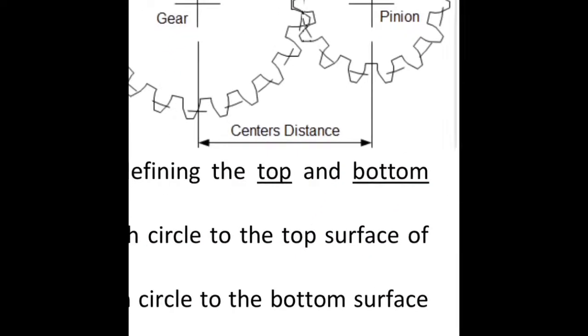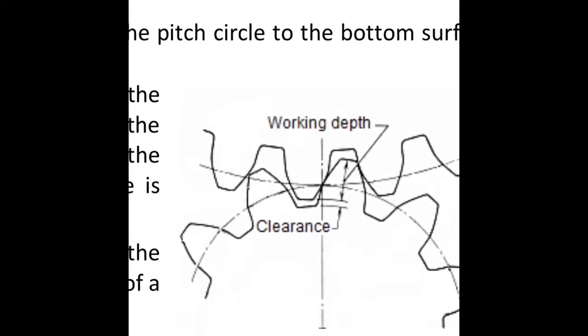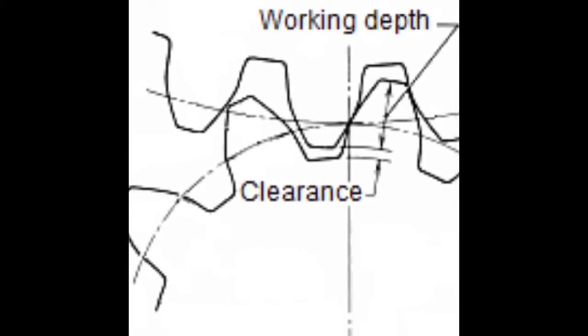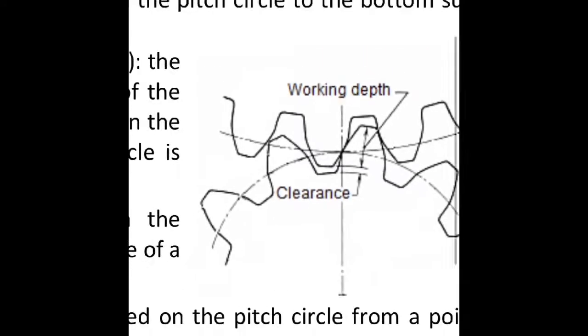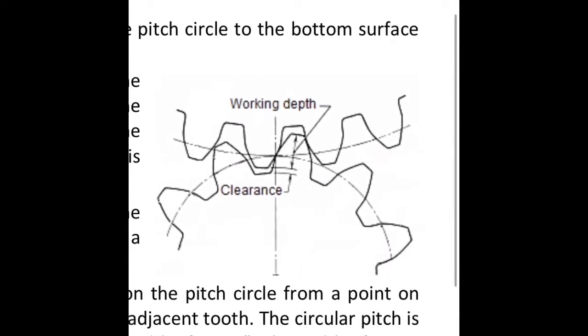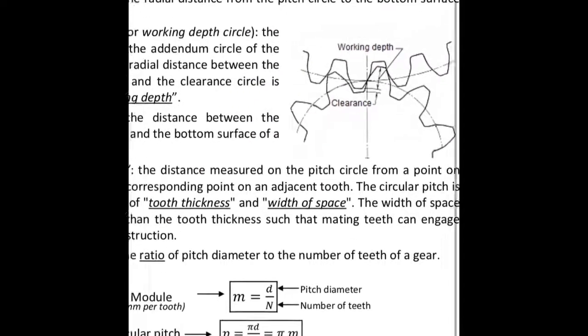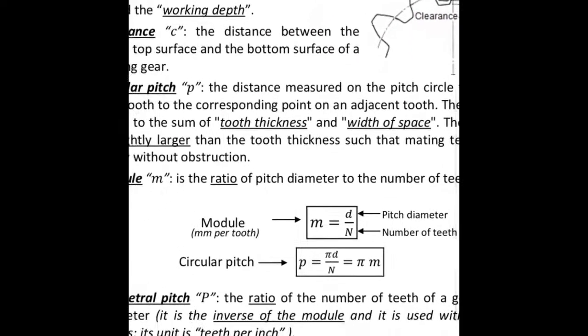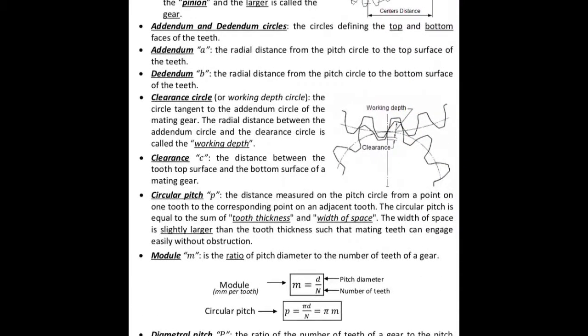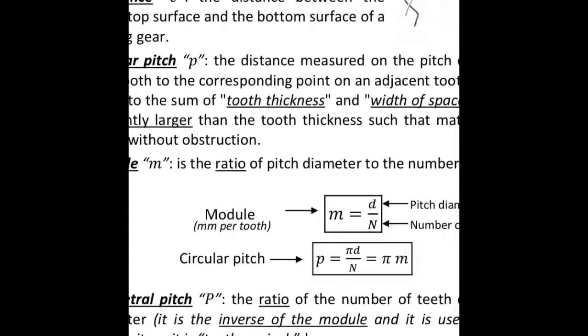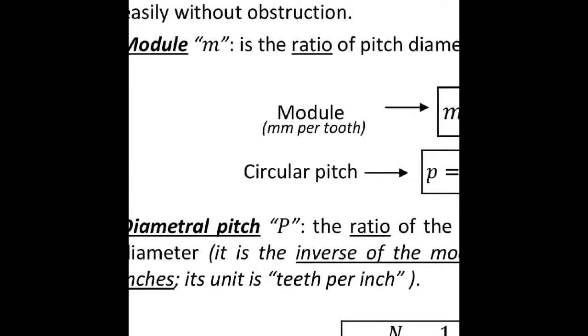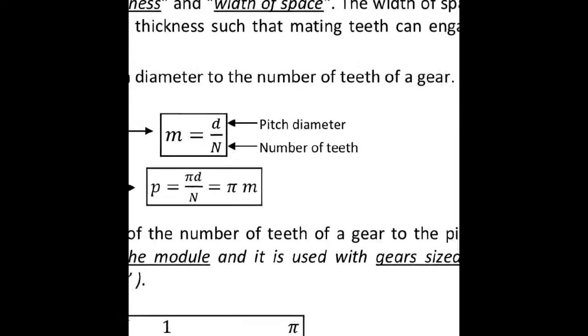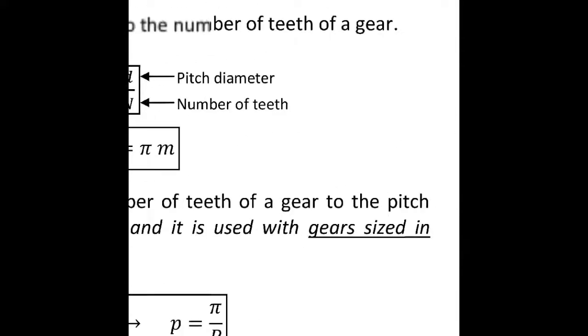Bevel gears: the teeth are similar to those of a spur gear but they are formed on conical surfaces instead of cylinders. Bevel gears transmit rotation between intersecting shafts. The simplest type has straight teeth. However, there are other types where the teeth form circular arcs, called spiral bevel gears. With spiral bevel gears, the teeth engagement is more gradual, similar to helical gears, and thus it is less noisy and suitable for high speeds.